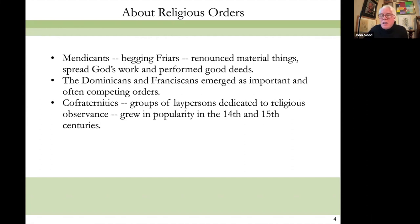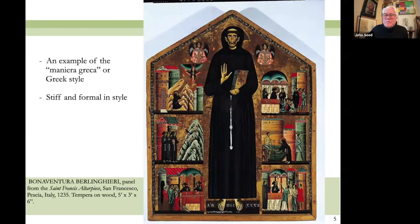The mendicants were spreading God's word and God's work. The Dominicans and the Franciscans emerged as tremendously important, and we'll see an image of St. Francis in just a moment to flesh that out. Co-fraternities — groups that brought together lay people with religious orders — grew tremendously in popularity toward the end of this period. So we mentioned St. Francis; let's start with our first image of the lecture and see how he was portrayed.